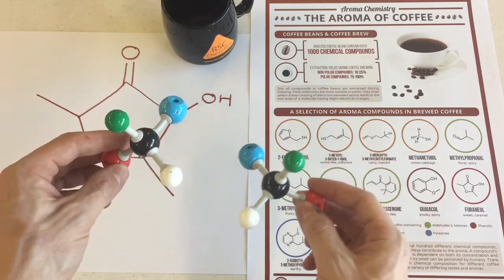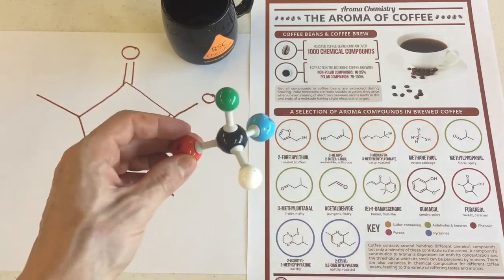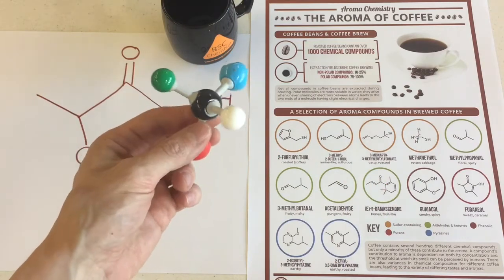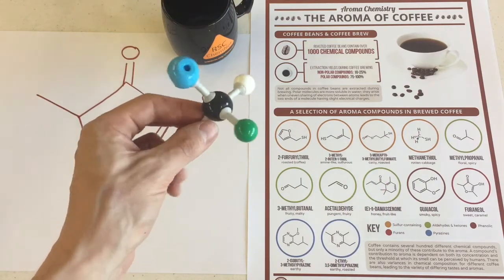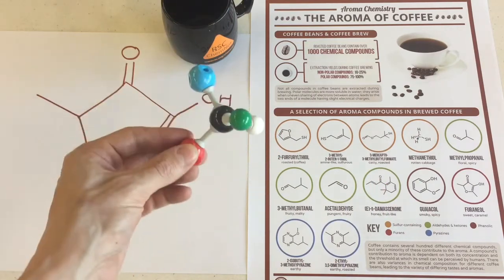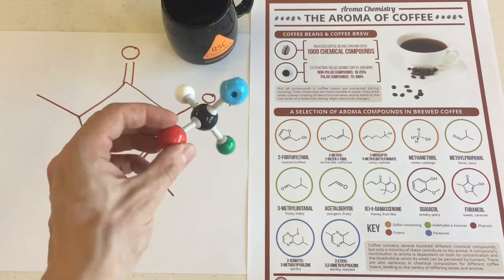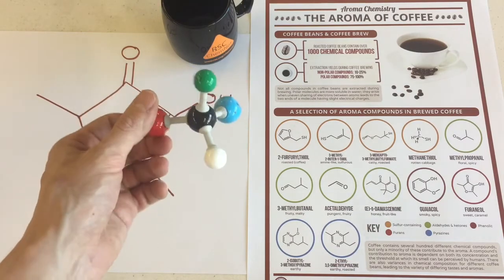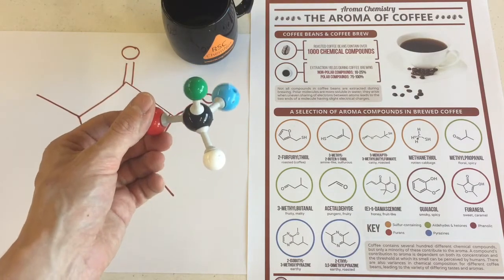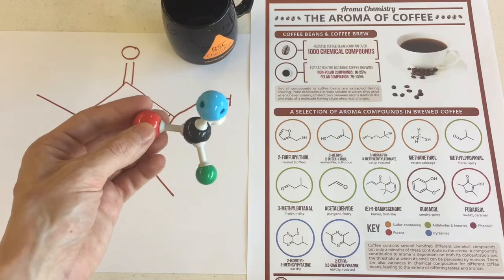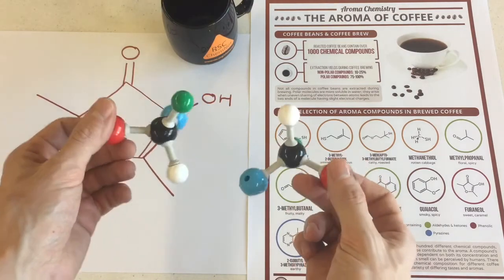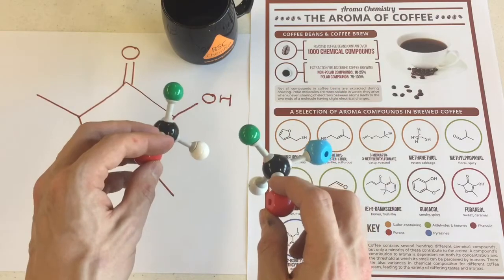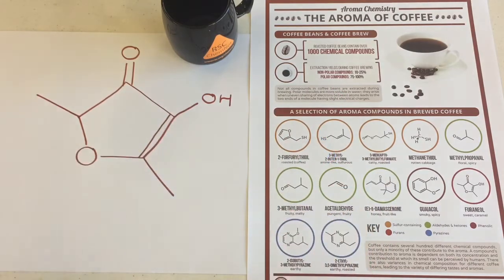Sometimes when you have these molecules developed in biology, you only make one of them because plants or animals can be very clever and use enzymes to coordinate the production of just one particular optical isomer. However, because of the presence of a chiral centre, when we synthesize things in the lab we often get both.